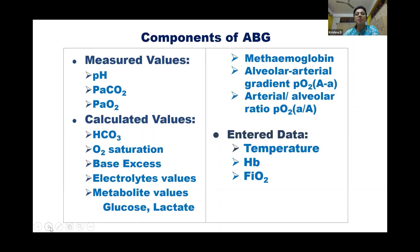In the components of ABG, there are some major values like pH, PaCO2, and PaO2. And there are some calculated values — they are bicarbonate, SaO2, base excess, some electrolyte values, and metabolic values like glucose and lactate.